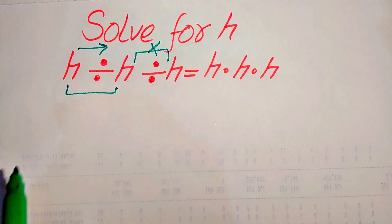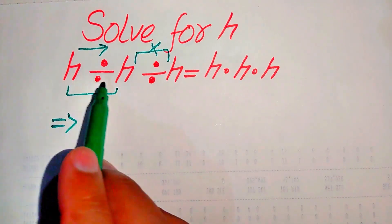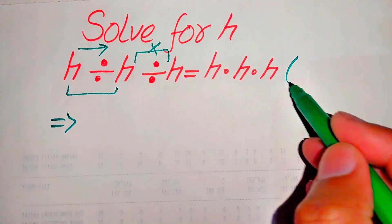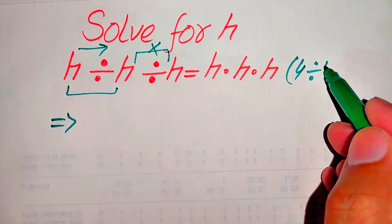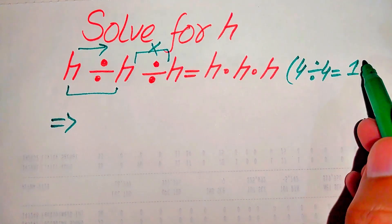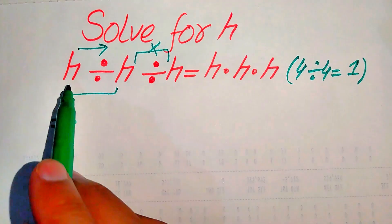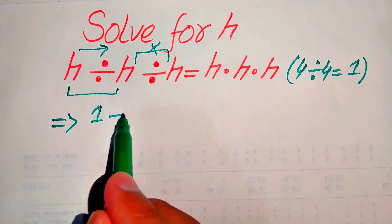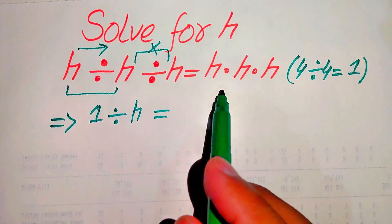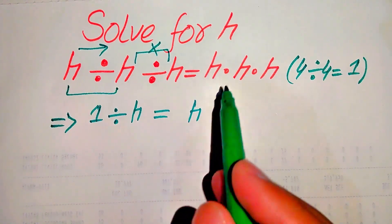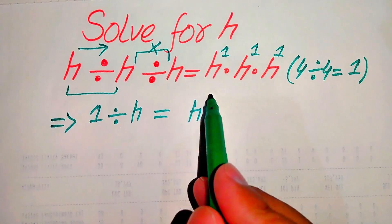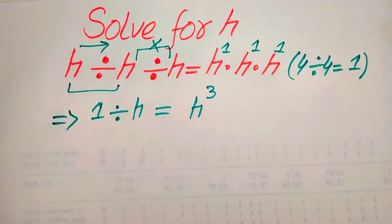So first we need to do the division of the first two terms. h divided by h equals 1, because if you divide any two same numbers you always get 1. According to this rule, when you divide h by h you get 1. So we have 1 divided by h on the left hand side. On the right hand side, h is multiplied three times and the exponent of each h is 1, so we add all three exponents to get h cubed.